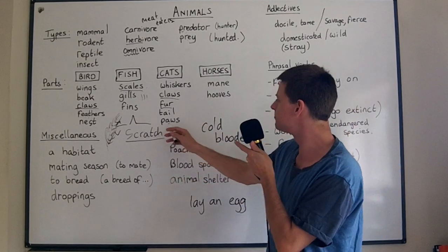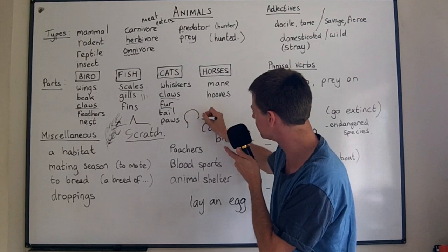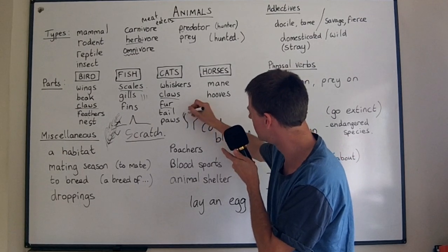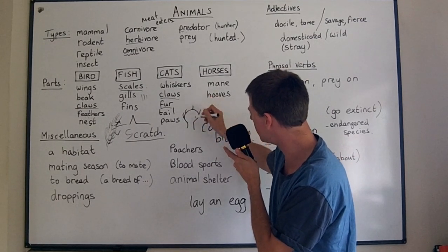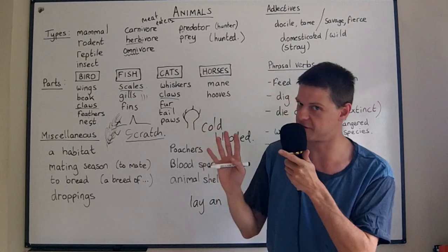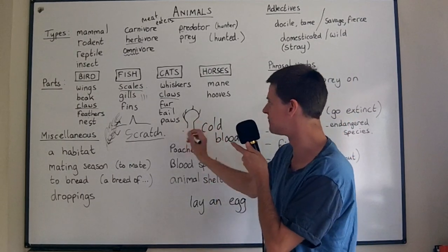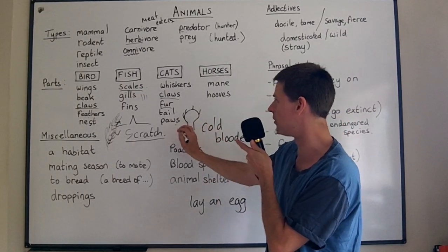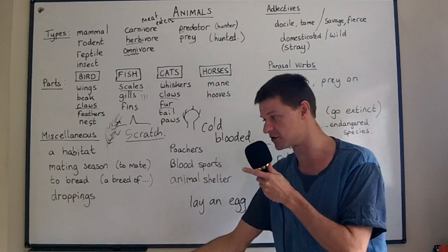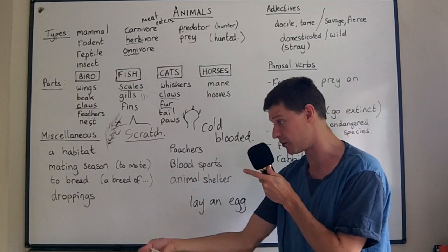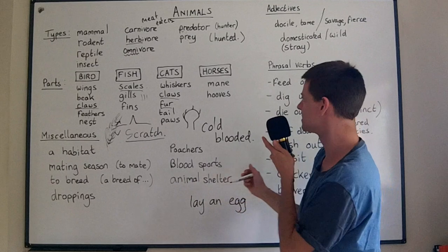Cats and dogs also have paws. A paw is the whole foot or hand area, but you wouldn't call it a hand or foot — you'd call it a paw. They have four paws. If you want a dog to give you its paw, you often say 'paw' as a command.